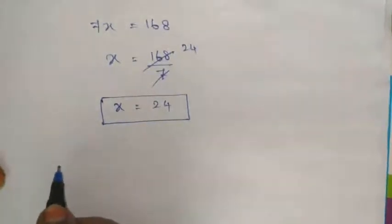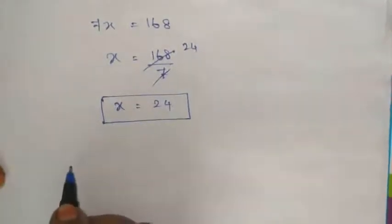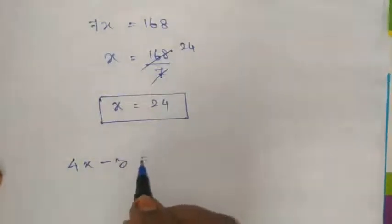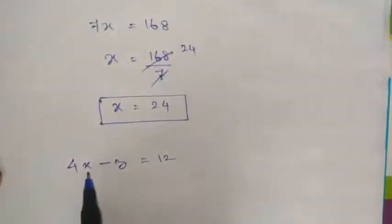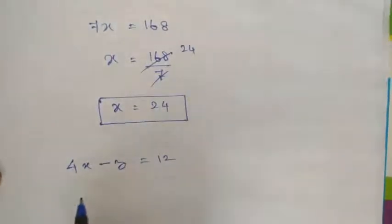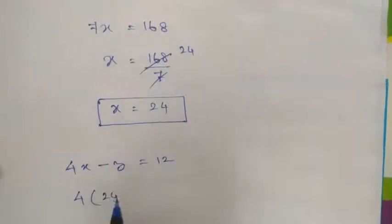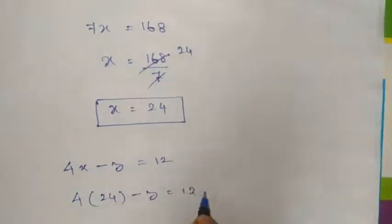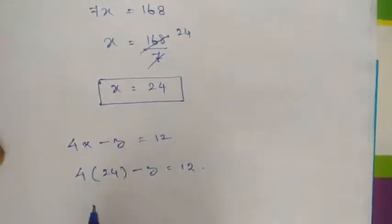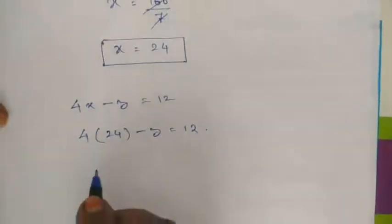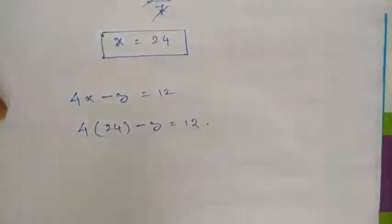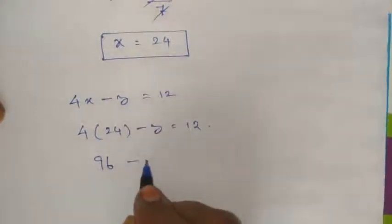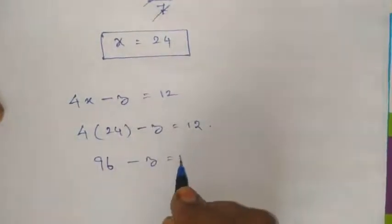Using the third equation 4x minus z equals 12, and substituting x equals 24: 4 times 24 is 96, so 96 minus z equals 12, giving z equals 84.